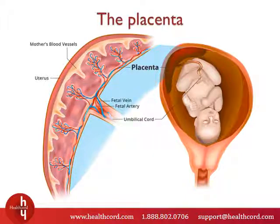The placenta is a temporary organ that grows during pregnancy. It's the only dispensable organ in the human body. The placenta attaches to the wall of the uterus and forms a connection between the mother and the developing baby. This connection is essential for providing the baby with the oxygen and the nutrients necessary for growth, and for removing the waste products from the baby's blood. The blood vessels of the mother and the baby are found side by side inside the placenta, which keeps their blood supply separate.